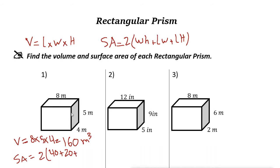And the other side, this one, is 8 times 4, which is 32. If you add these, you get 60 plus 32 is 92 times 2, it's 184, and it is square meters.